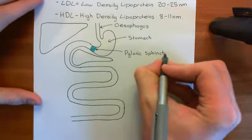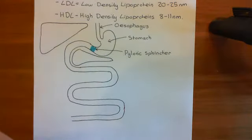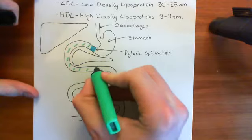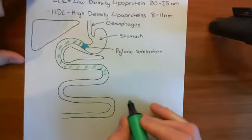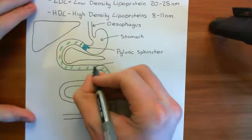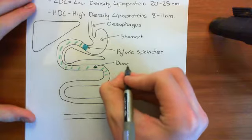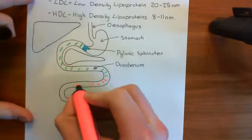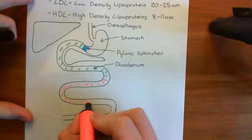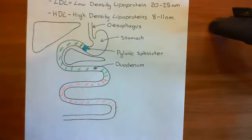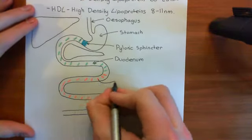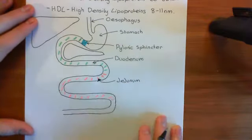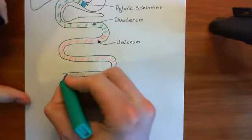After the pyloric sphincter, you then have the first portion of the small intestine, which I'm going to show in bright green here. All of this is the first portion of the small intestine and it's called the duodenum. Then the second portion of the small intestine, which I'm going to color in red, goes from the end of the duodenum and then has this loop all the way to the final portion of the intestine. The second portion of the small intestine is called the jejunum. And then the final portion of the small intestine down here, which I'll have in turquoise, is then called the ileum.